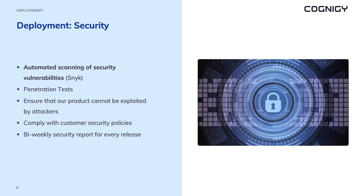We run regular security scans to ensure our platform is free from vulnerabilities. We use a tool called Snyk to scan our products multiple times a day. Vulnerabilities are categorized as low, medium, high, and critical. We have built a Cognigy agent that notifies us every day about new findings, helping us create a bi-weekly security report aligned with every software release. The security report can be delivered on request to customers and prospects. Critical and high vulnerabilities are solved with high priority — for example, a widely reported vulnerability was identified quickly and a fix was implemented on the same day to ensure our environments were not affected.